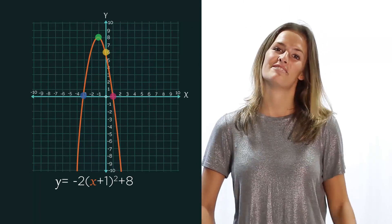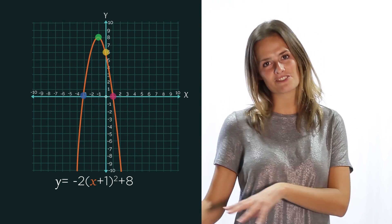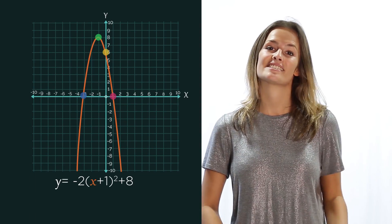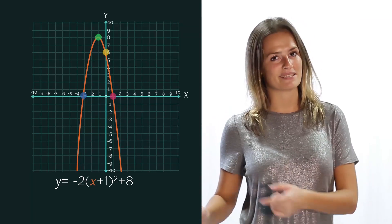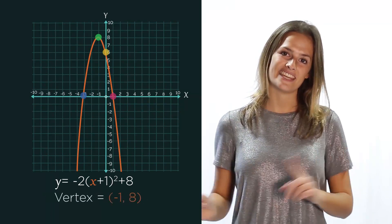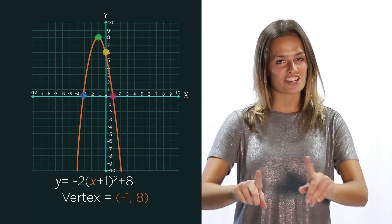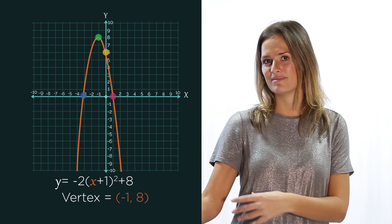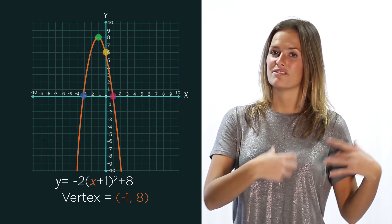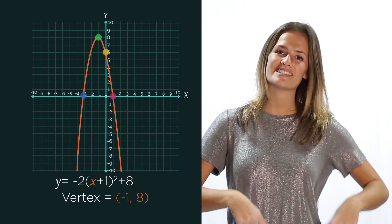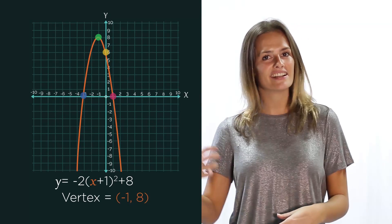So there we have completing the square to plot the graph. The vertex is the minimum or maximum point on the curve and can be found using these two numbers. Just remember 'second same.' So we change the sign of the first number but we keep the sign of the second number the same.